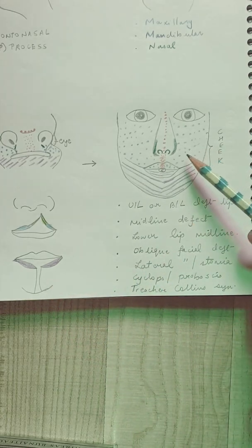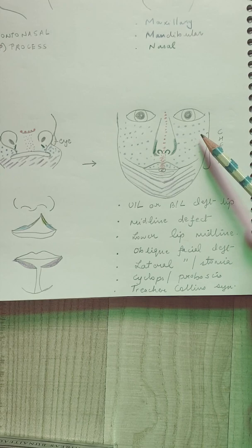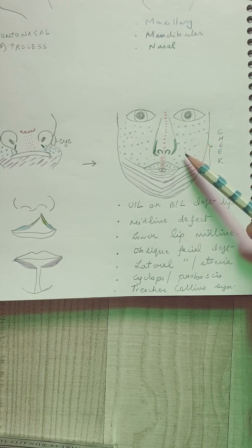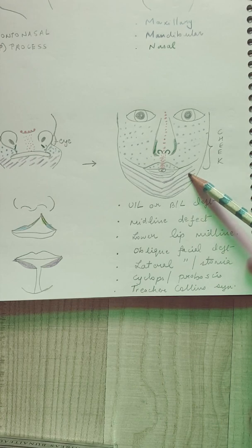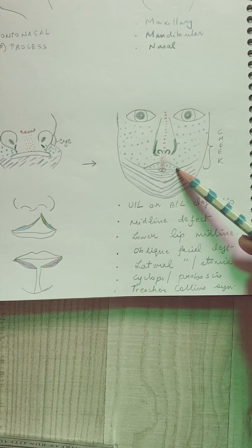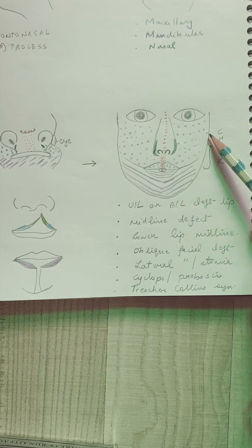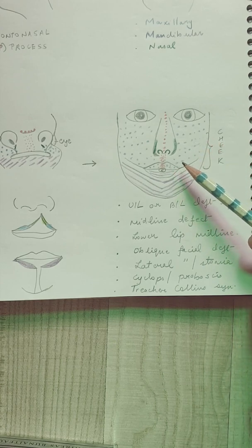Oblique facial cleft was of the lateral nasal process and the maxillary processes. Failure of fusion of maxillary and mandibular processes can lead to a lateral facial cleft. There will be a cleft from angle of mouth extending to the ear, which can lead to a macrostomia or microstomia.